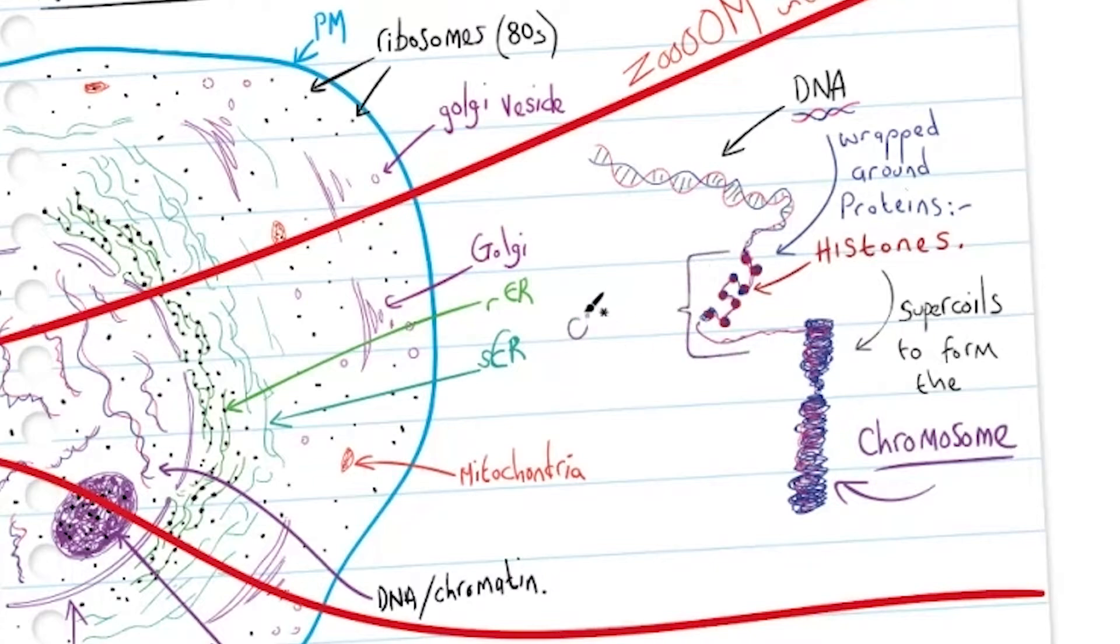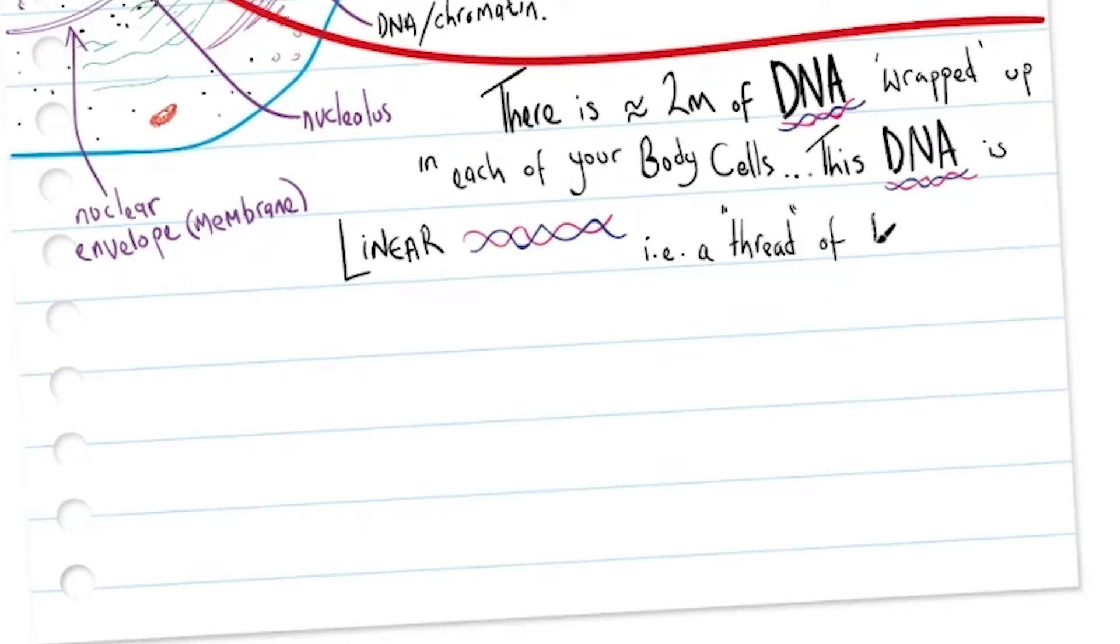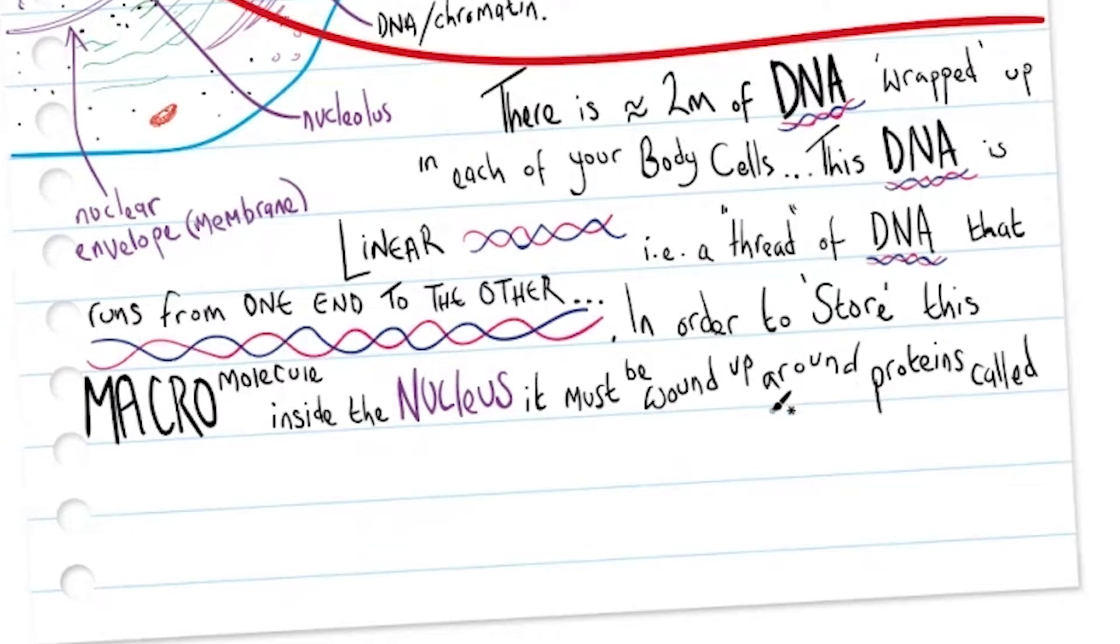Remember, the histones plus the DNA is a substance called chromatin. There's approximately two meters of DNA wrapped up in each of your body cells, and this DNA is linear—it is a thread of DNA that runs from one end to the other.